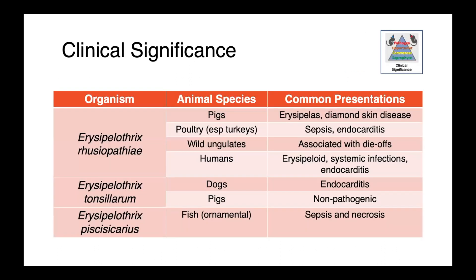Erysipelothrix rhusiopathiae is associated with disease in a wide variety of hosts. In a veterinary context, pigs are probably the most well-recognized, where it causes a disease called erysipelas, or diamond skin disease. In poultry, particularly turkeys, we see sepsis and endocarditis.